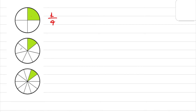Count: 1, 2, 3, 4, 5, 6, 7 — 7 parts in total, 1 for shaded, so 1 over 7. And for this one, it's quite easy — you can count by yourself, and you get the fraction 1 over 8.